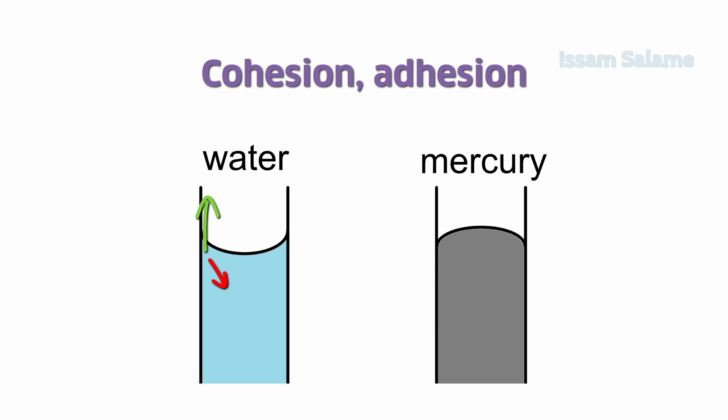In the case of mercury, cohesion forces are much stronger than adhesion forces. That is why the particles close to the walls of the container are attracted towards the mercury particles rather than being attracted towards the walls of the container, resulting in a convex meniscus.